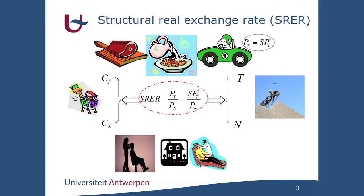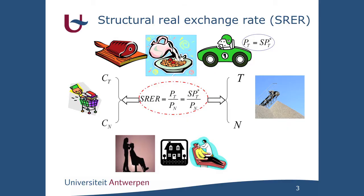Tradable goods are goods we can sell everywhere in the world, like meat, cereals, or manufactured goods. Non-tradable goods are goods that we can only sell in our own country, like haircuts, housing services, or other services. We need to know the prices of these goods, and the relative price between tradable and non-tradable goods — known as the structural real exchange rate — will determine the allocation of resources and expenditures.